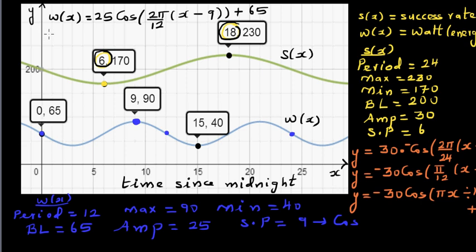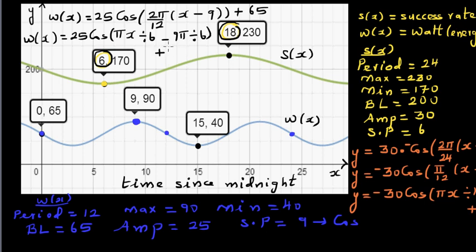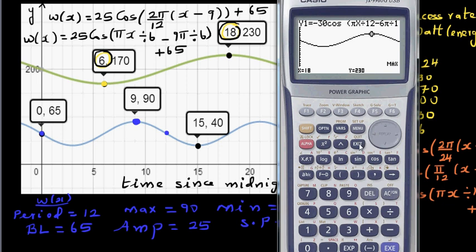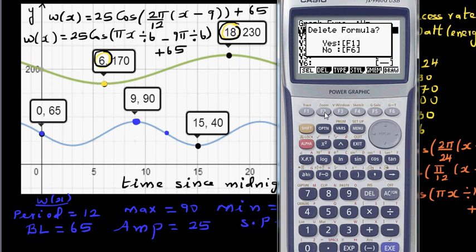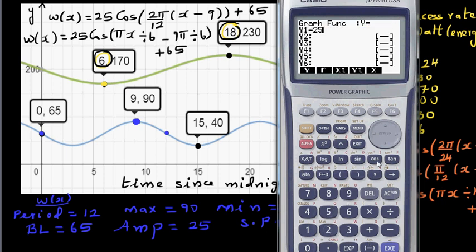To enter this on the calculator, W of X is 25 cos(πx/6 minus 9π/6) plus 65. Enter: 25 cos(shift π × x ÷ 6 minus 9 shift π ÷ 6) plus 65.